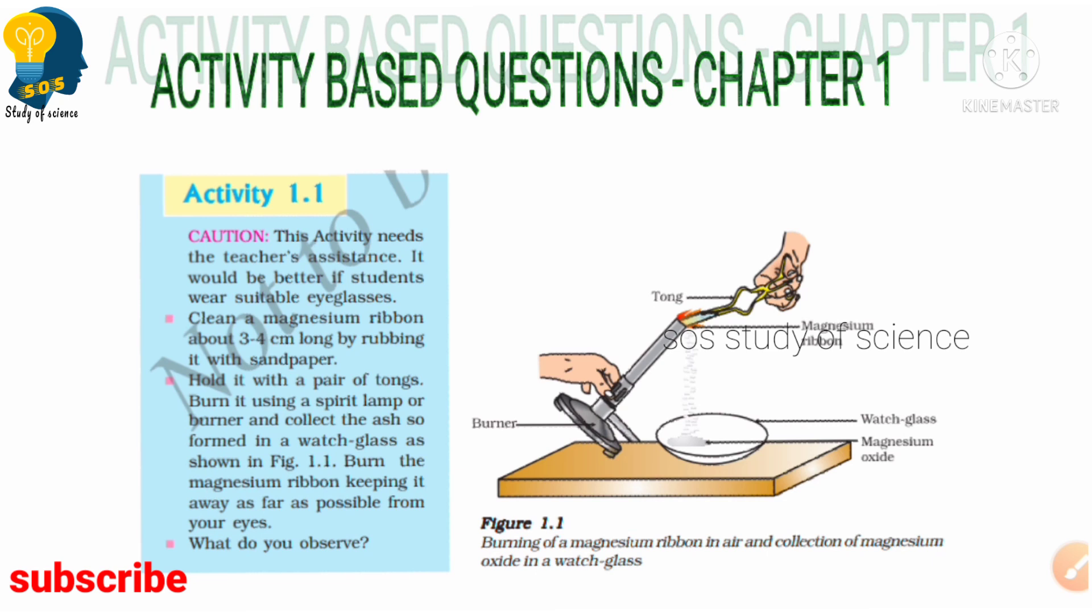In this activity, firstly they are saying clean a magnesium ribbon about three to four centimeters long by rubbing it with sandpaper. Hold it with a pair of tongs, burn it using a spirit lamp or a burner, and collect the ash so formed in a watch glass as shown in Figure 1.1. What is your observation? That is what the activity is all about. Firstly they are saying clean the magnesium ribbon by using the sandpaper.